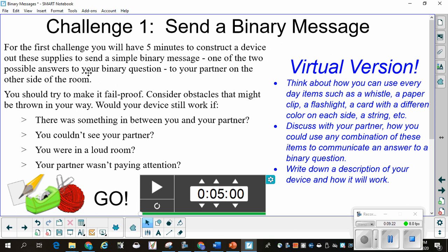So you want to use supplies to send a simple binary message, one of the two possible answers to your question to your partner on the other side of the room. You should try to make it fail-proof. Consider obstacles that might be thrown in your way. Would your device still work if there was something in between you and your partner? What if you couldn't see your partner? Or you were in a very loud room? Or maybe your partner wasn't even paying attention?